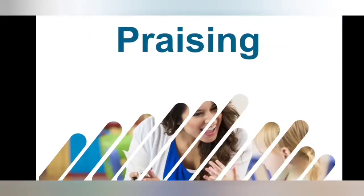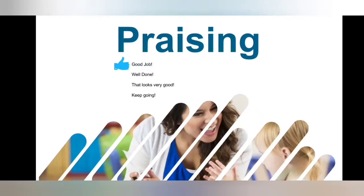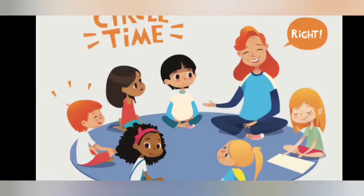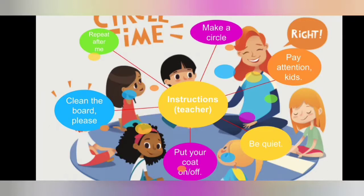Let's continue with praising. A positive classroom environment is crucial for young learners — they might be sensitive and want to be encouraged by their teachers. This enables them to be more interactive and positive. There are many praising words to use: 'good job,' 'well done,' 'that looks very good,' or 'keep going.' Another important aspect is giving instructions in English. Speaking English all the time is the best option, and repeating the same phrases every day — like 'repeat after me,' 'please clean the board,' 'be quiet,' 'pay attention,' or 'make a circle' — helps students memorize those words and phrases.